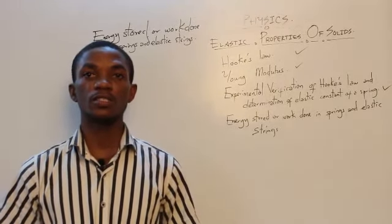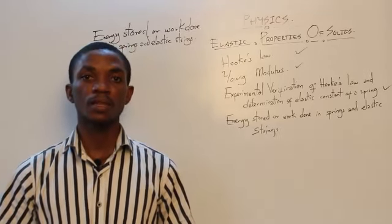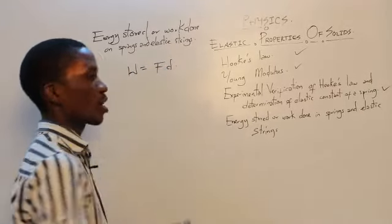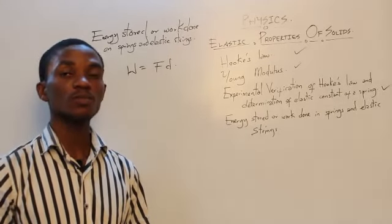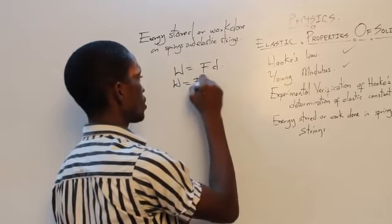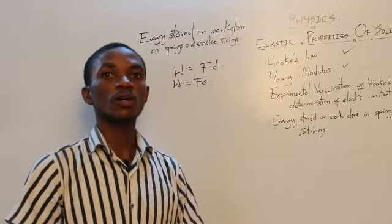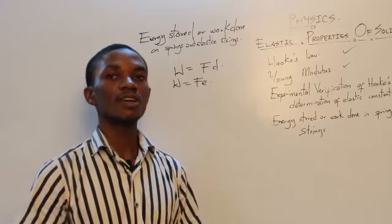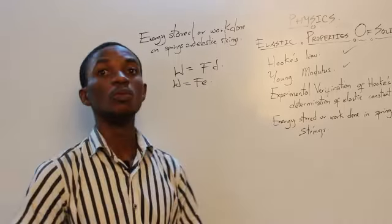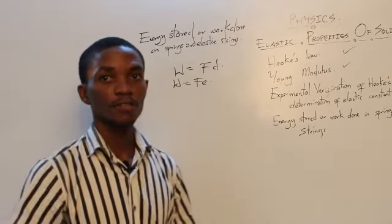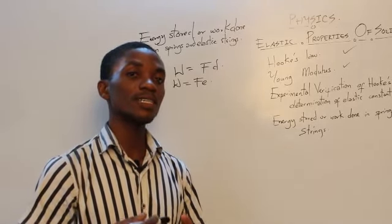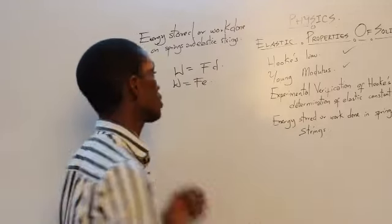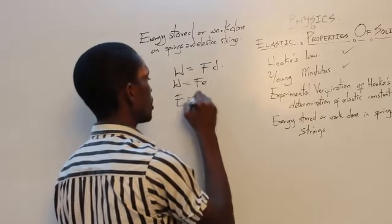Energy stored and work done on springs and elastic strings. We know that work done equals force multiplied by the distance travelled by the force. The same thing applies to springs: work done in springs is force multiplied by the extension, since that is the direction and distance the force moves the spring. So work W equals Fe. Also, there is potential to do work in every spring — that is why we talk about energy stored — and energy stored is also given by the formula Fe.